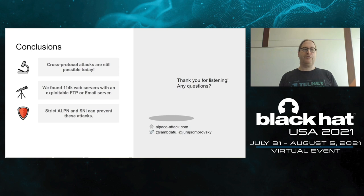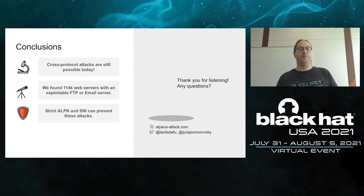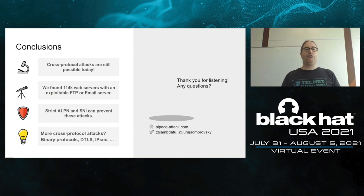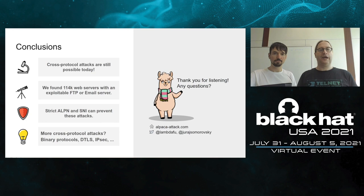In conclusion: cross-protocol attacks are still possible today. We found 114,000 web servers with exploitable FTP or email servers having compatible certificates. Strict ALPN and SNI verification can prevent these attacks completely at the cryptographic layer. For the future, we would like to see more cross-protocol attacks explored, especially including binary protocols and other secure channel implementations such as DTLS and IPsec. Developer guidance for configuring strict ALPN and SNI verification in popular TLS libraries is available on our webpage.